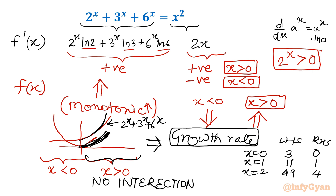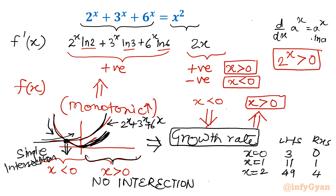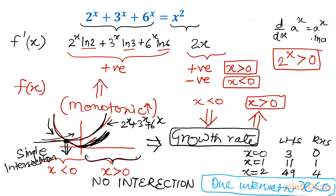For the left-hand side (x negative): one function is dipping down and another is increasing, so at most one intersection. We will get a single intersection, and that intersection will be on the negative side. Our conclusion is we are getting exactly one intersection at x negative.